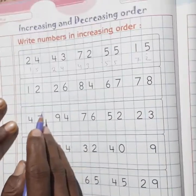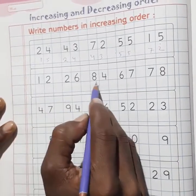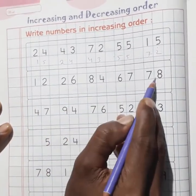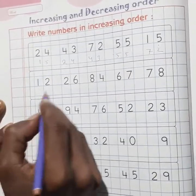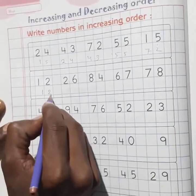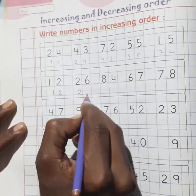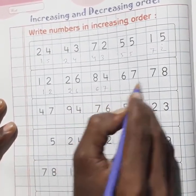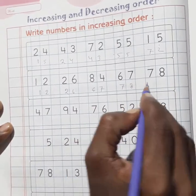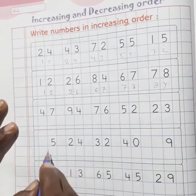Next question. Here, the 12, 26, 84, 67, and 78. Here the smallest number is 12. So write at first 12, then 26, then 67, then 78, and the last 84.